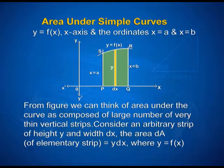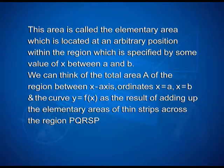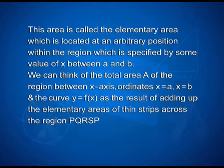The area dA of the elementary strip is equal to y·dx, where y = f(x). Here we have the x-axis and y-axis and the curve given by y = f(x). This is the width of the strip dx and the height is y. x = a is one ordinate and x = b is another ordinate. This area is called the elementary area, located at an arbitrary position within the region specified by some value of x between a and b. We can think of the total area A of the region between the x-axis, ordinates x = a, x = b, and the curve y = f(x) as the result of adding up the elementary areas of thin strips across the region P, Q, R, S.